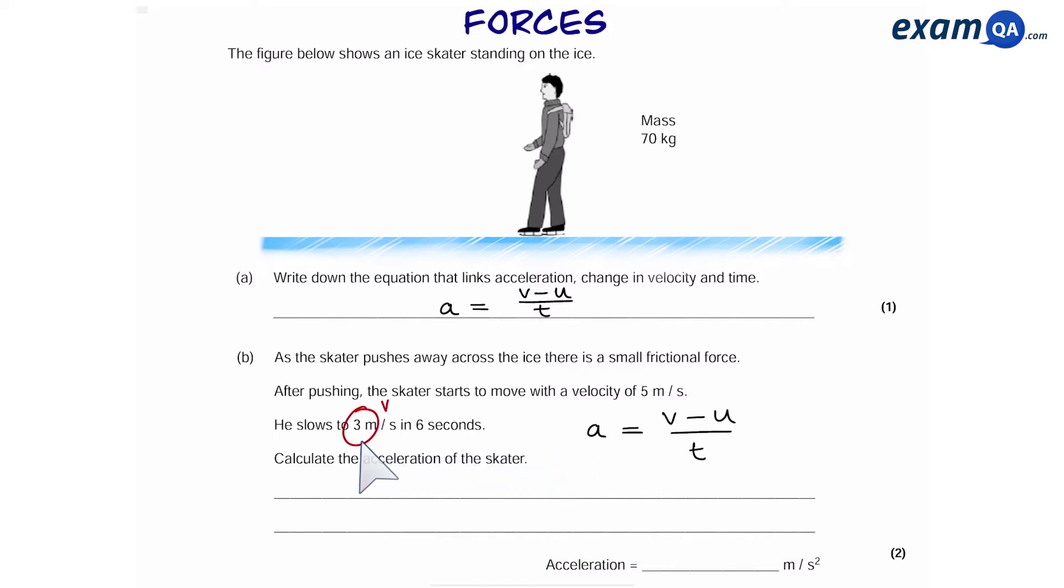Now we already have V. So V minus U is basically change in velocity. U is initial velocity and V is final velocity. A good way to remember that is U comes before V in the alphabet. That's why U is the initial. And together they are divided by time.